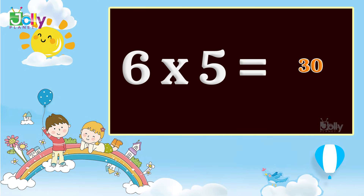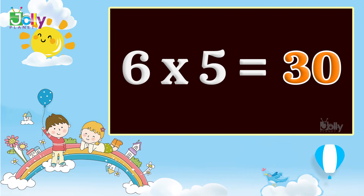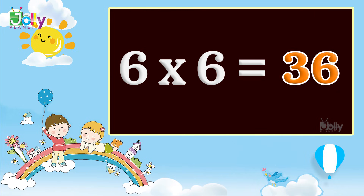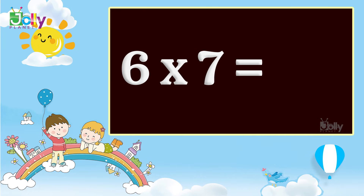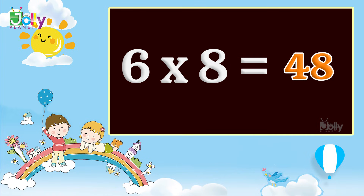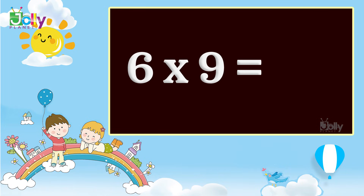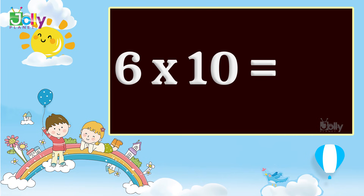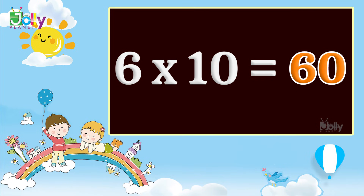Six six's are thirty-six. Six seven's are forty-two. Six eight's are forty-eight. Six nine's are fifty-four. Six ten's are sixty.